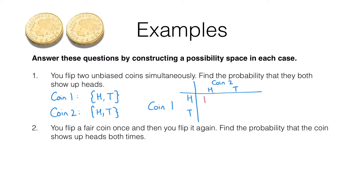The first outcome you could have is heads on coin one and heads on coin two. You could also have heads on coin one and tails on coin two, tails on coin one and heads on coin two, and tails on coin one and tails on coin two. These are the four possible outcomes. Each of these four outcomes is equally likely because the two outcomes for coin one and coin two were each equally likely themselves.